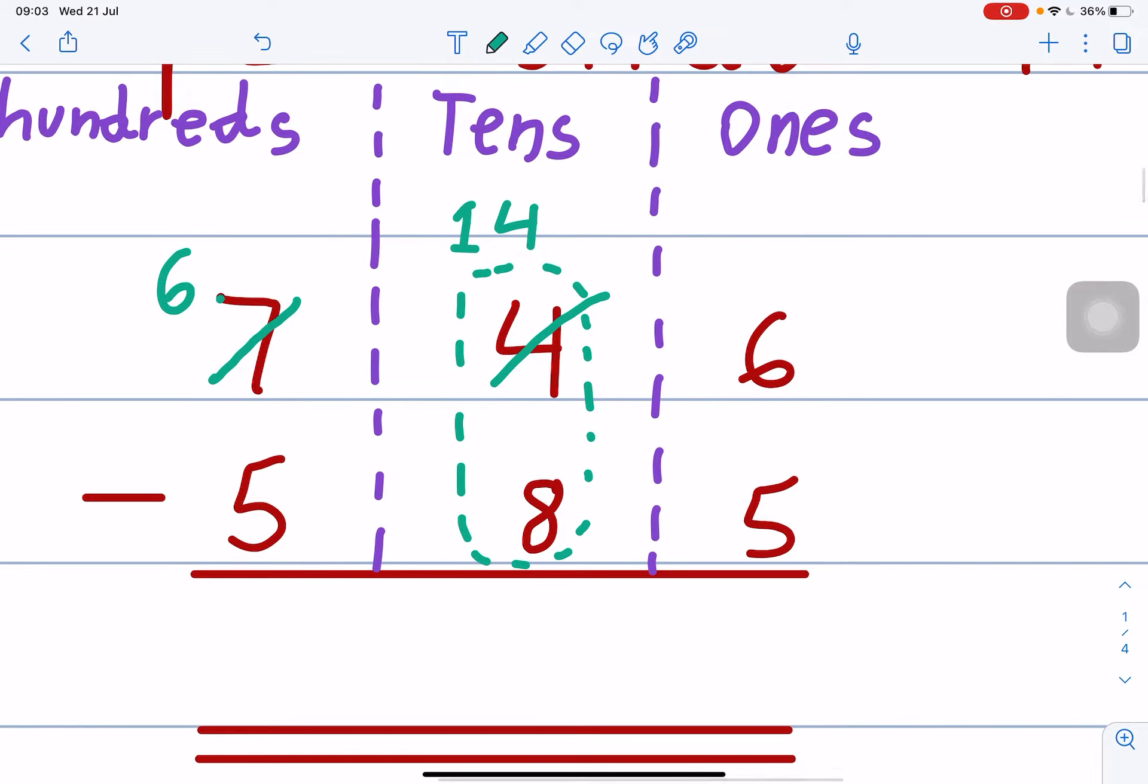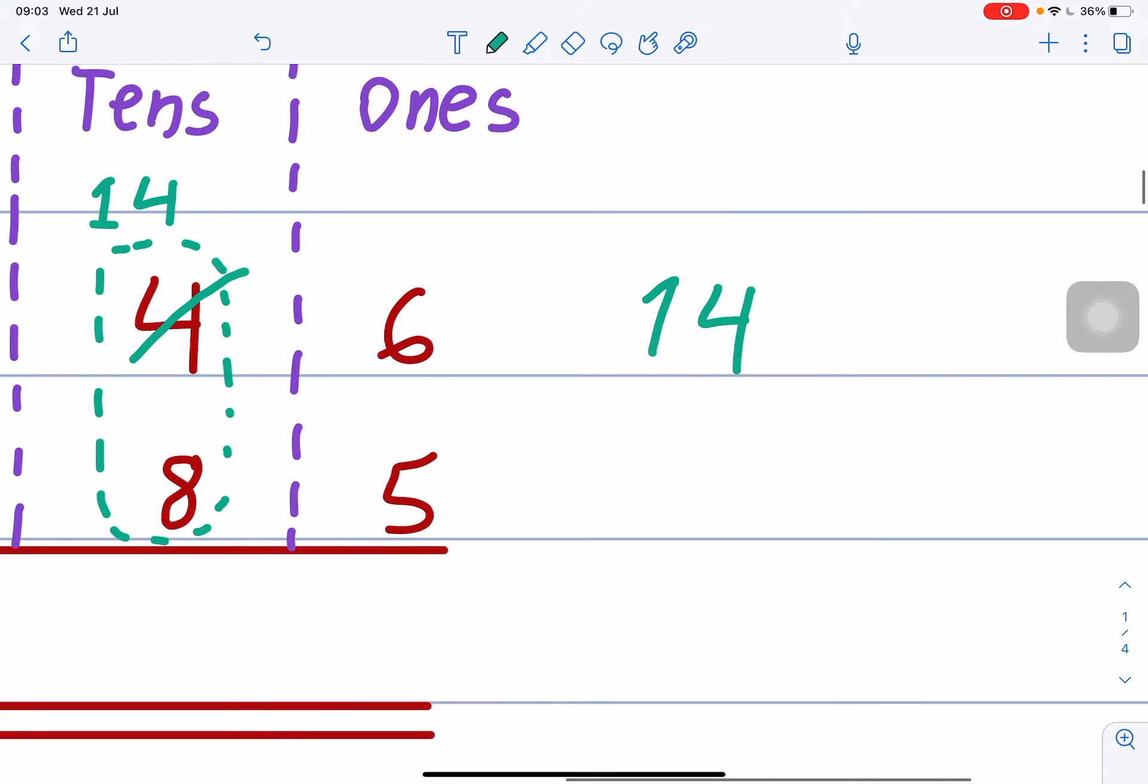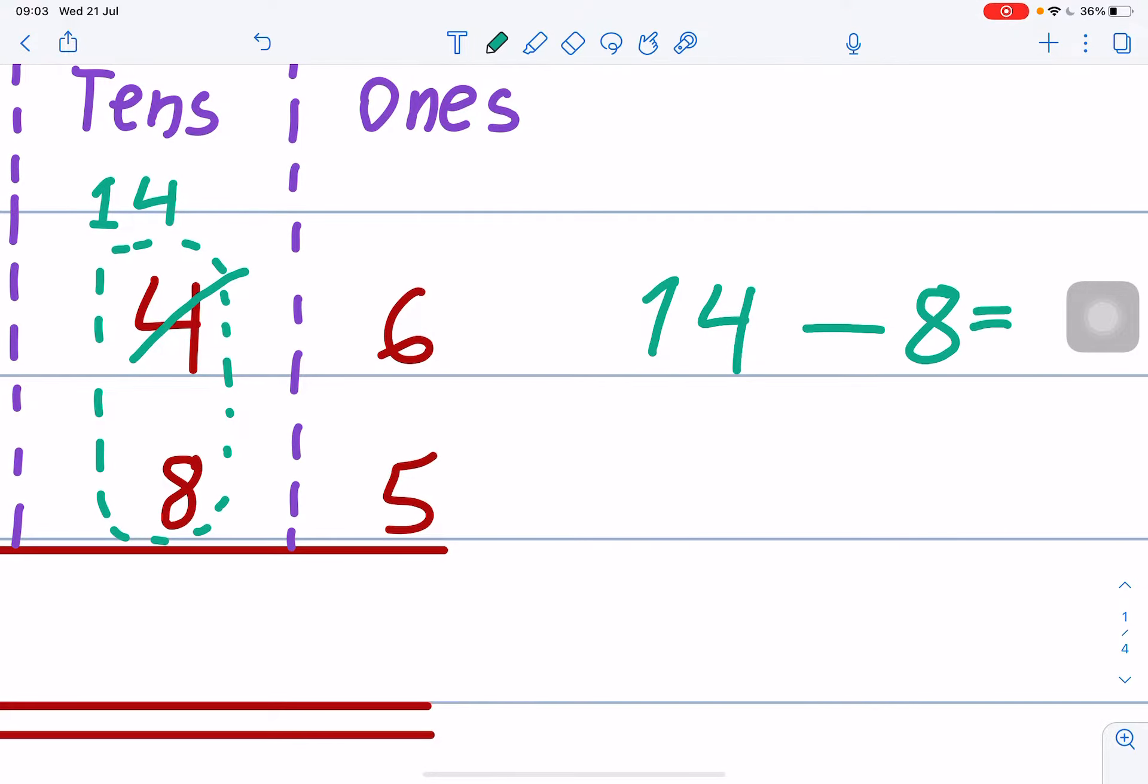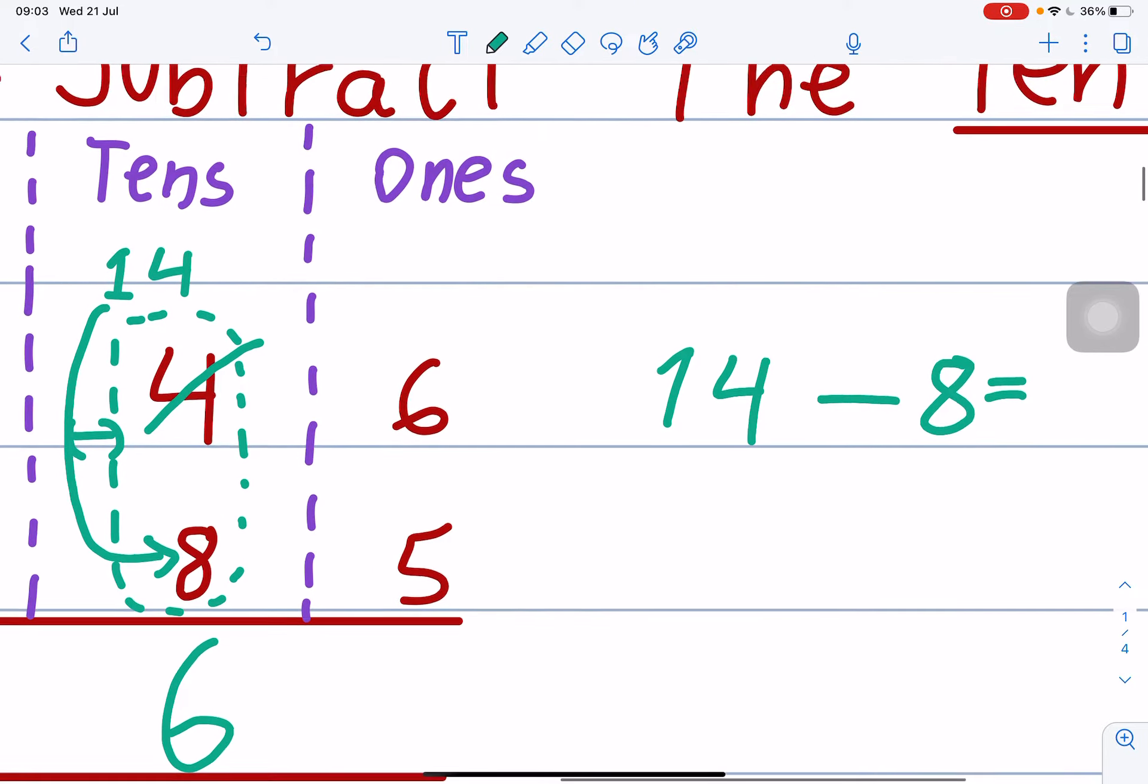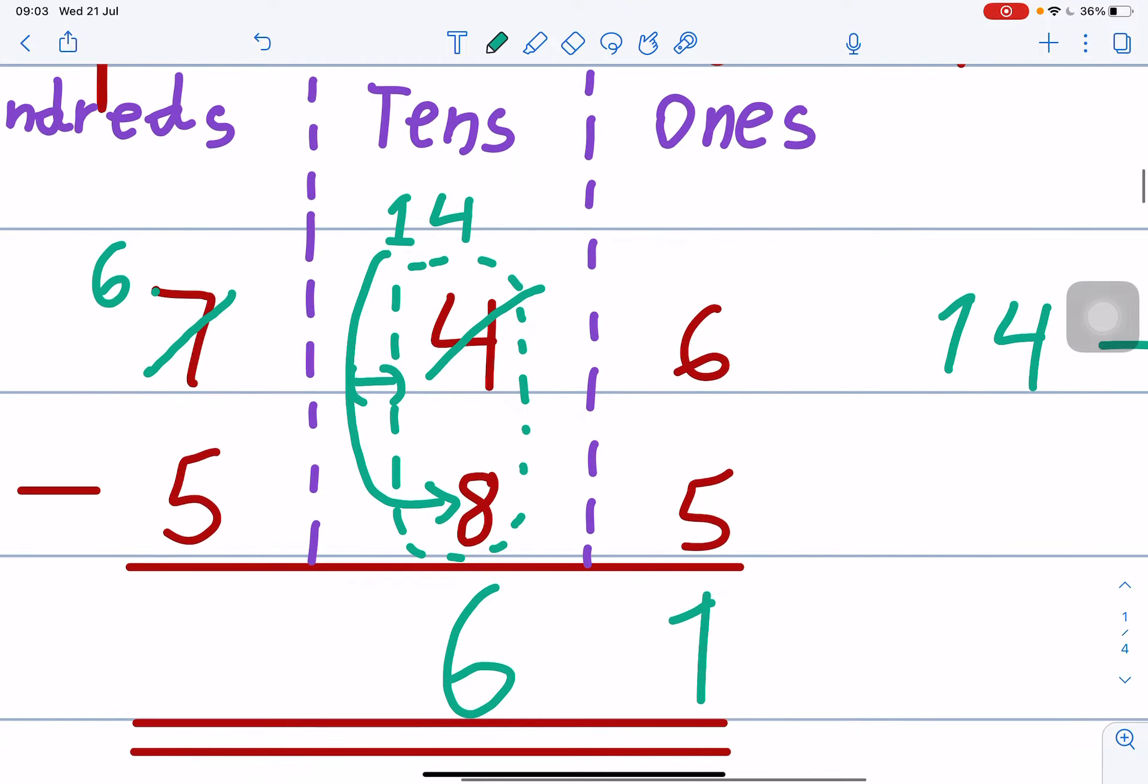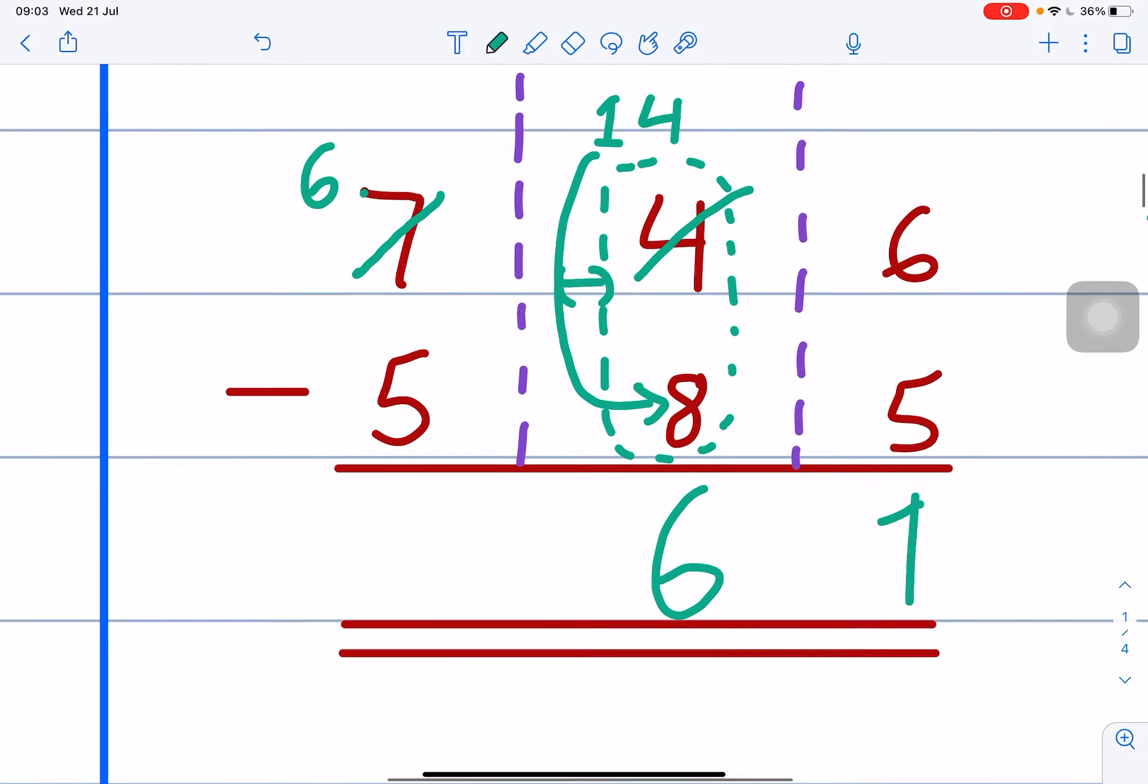Okay, minus tens. 14, 14 minus 8. 14 minus 8. So, 14 minus 8 is equals to 14, 13, 12, 11, 10, 9, 8, 7, 6. 6. Oh, wait. This was 1. Okay, 1. 6. Alright? So, step 2 finished. Let's do step 3 now.